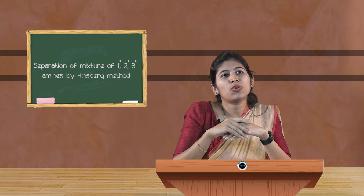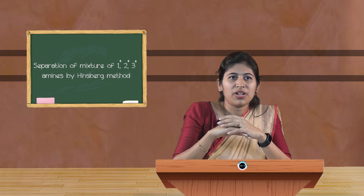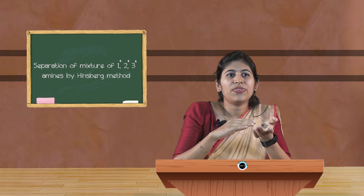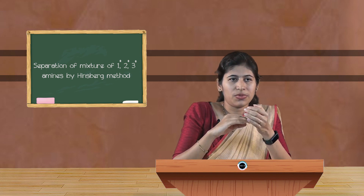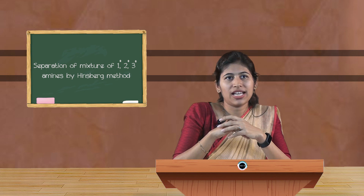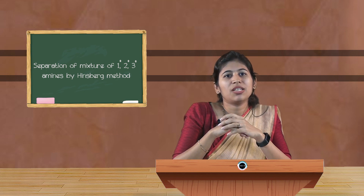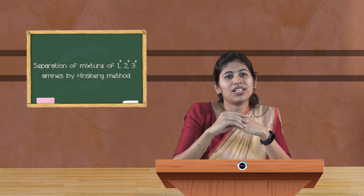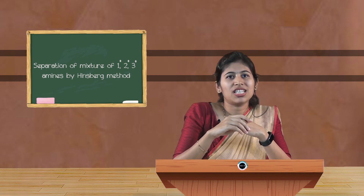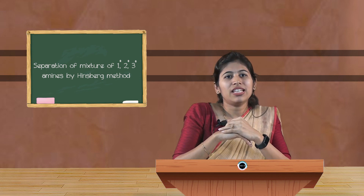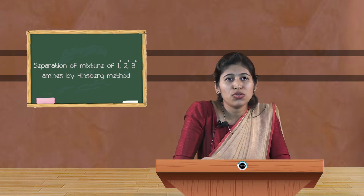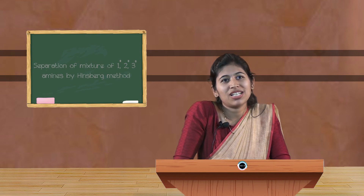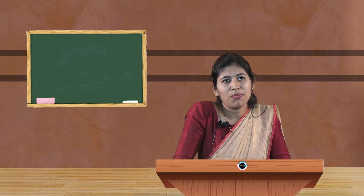Similarly, the primary amine product in the aqueous layer, when treated with hydrochloric acid, gives the primary amine hydrochloride, and when treated with sodium hydroxide gives the pure primary amine. In this way, we can separate all three amines. This method can also be used for the detection of primary, secondary, and tertiary amines. Thank you.